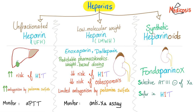Third — synthetic heparinoid, the fondaparinux. Why? Because it's a selective antithrombin 3 inhibitor of factor 10A, similar to the low molecular weight. It just inhibits one factor: 10. And it's safer in HIT. So selective and safer — this is the fondaparinux.